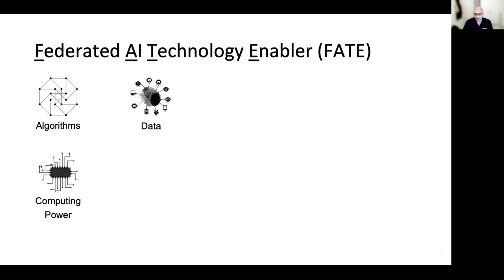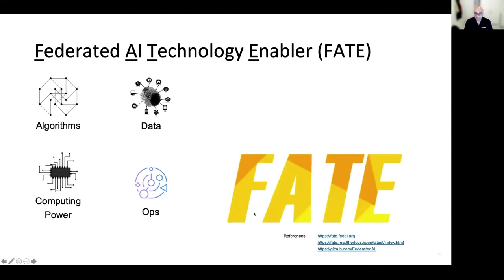We saw earlier the three pillars that support AI and machine learning. I'd like to add a fourth pillar here: ops. It is one thing to build a model, but entirely another to include it in a product. Models are also often refined with new data that is constantly collected. Federated AI Technology Enabler, or FATE, is a suite of libraries and services you can deploy in various forms on various form factors to enable your solutions with federated learning. FATE brings together algorithms on distributed computing power — whether it be servers in a data center or compute power in edges — with data that is local to those units. FATE is also open source and open to community participation, and we invite you to participate.